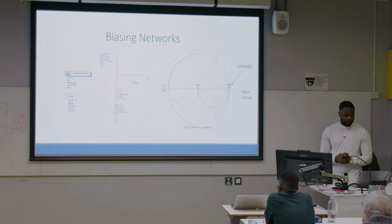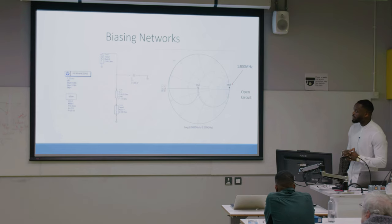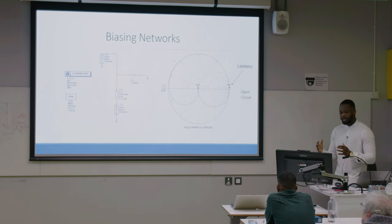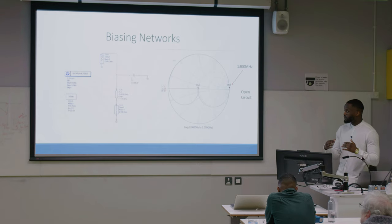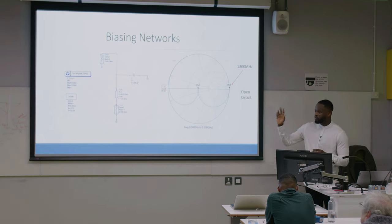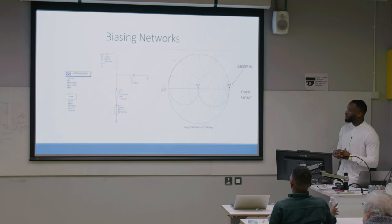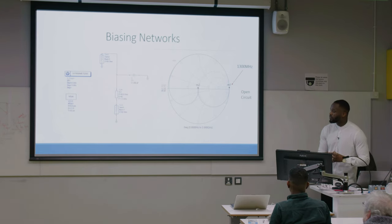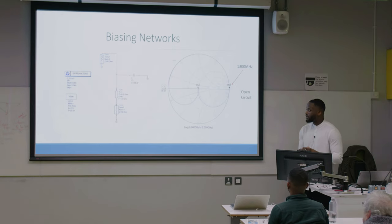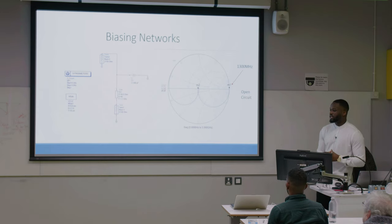The next part of the design was designing the biasing network. You can either use choke inductors, which block high frequency signals across a wide range of frequencies, but for my design I chose a quarter-wave transmission line because it's mostly used for narrowband applications. At the target frequency of 1.8 gigahertz it essentially sees an open circuit, meaning no RF signals at that frequency pass through to the DC supply, which could cause issues with the amplifier.